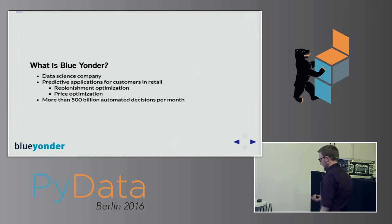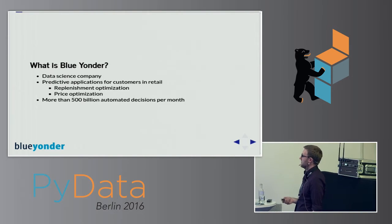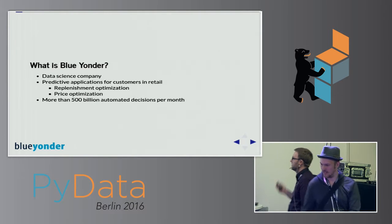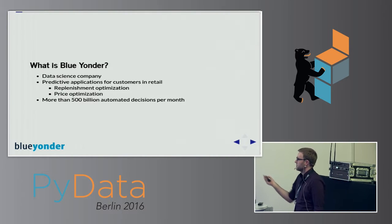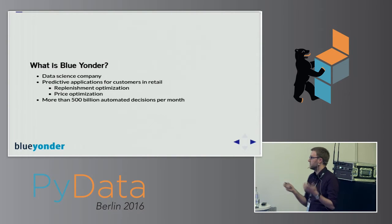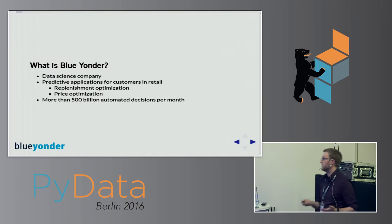Blue Yonder is a data science company and we develop predictive applications, in particular for retail — for instance, large supermarket chains. We do things like replenishment optimization, where we try to predict demand for certain articles and give suggestions regarding stock. We also do price optimization, estimating the relationship between sales and prices based on historical data. Currently we do more than 500 billion automated decisions per month for our customers.